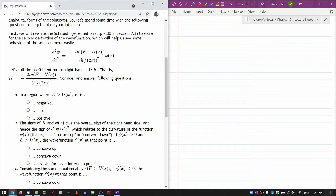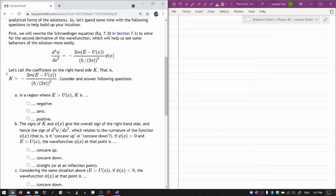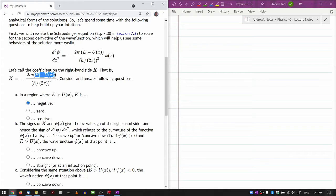It's pointing on this coefficient here, k minus 2m times the difference between the two energies. In the region where the total energy is greater than the potential energy, this entire coefficient should be negative because this combination is positive, but there's this minus sign here, so the whole thing is negative.